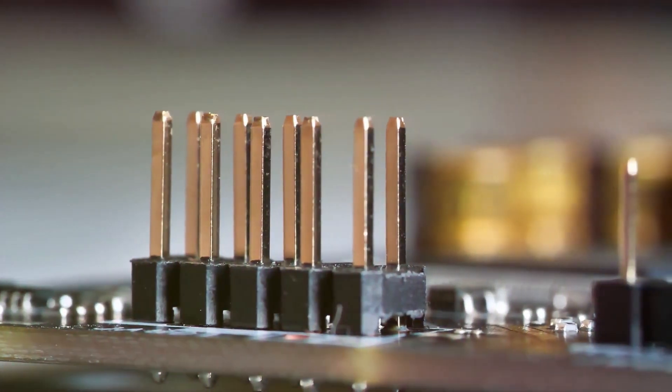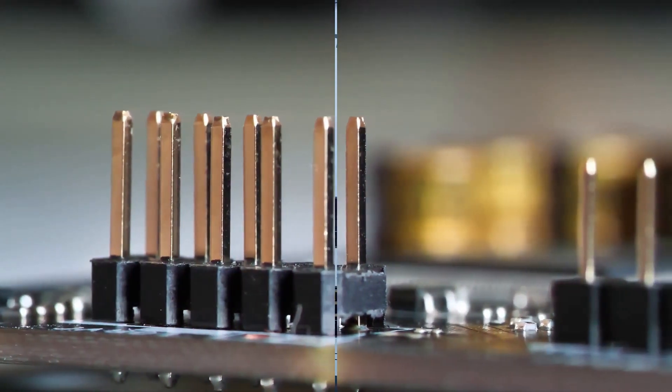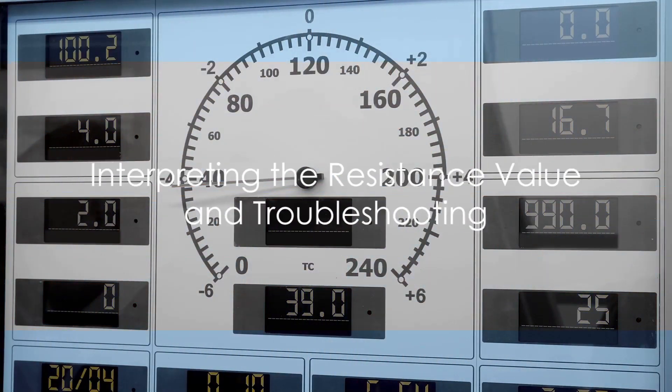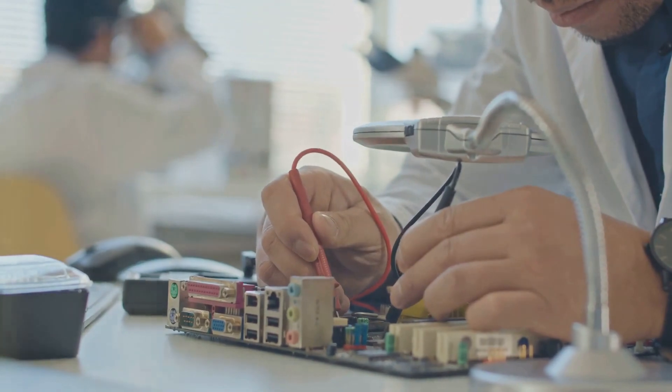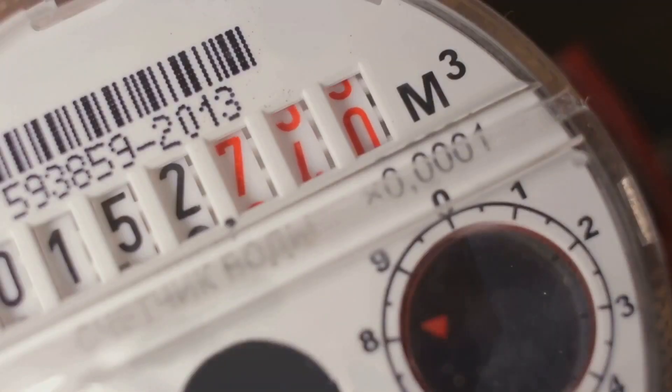With the resistance value recorded, let's interpret what it means. The resistance value you obtained should be within a specified range provided by the solenoid manufacturer. This range is indicative of a healthy solenoid coil. If the resistance is within this range, it's a green light. Your coil is functioning properly.